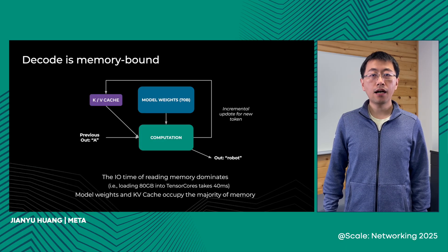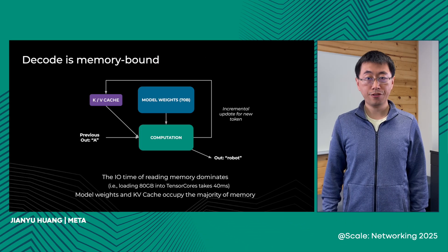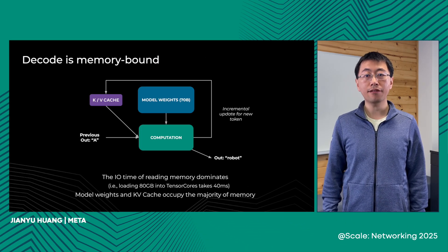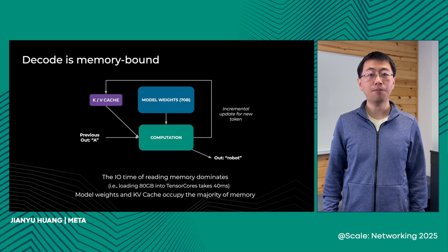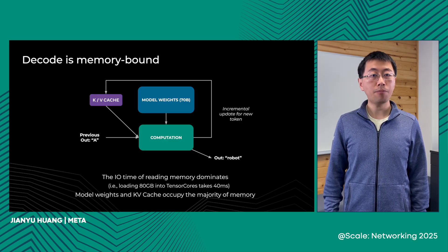Decoding on the other hand shows much less impact from compute complexity. Instead, the I/O time of reading memory dominates the decoding time. Model weights and KV cache occupy the majority of the memory. With the model weights fixed, the KV cache size is determined by the sequence length and batch size. Overall, decoding is memory-bound.